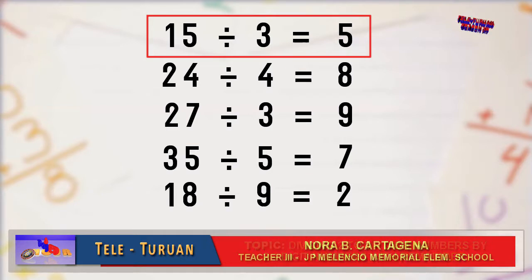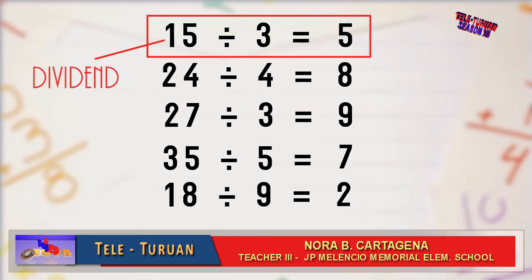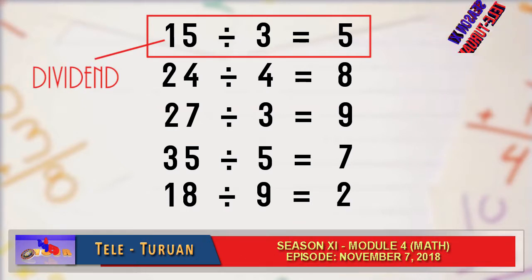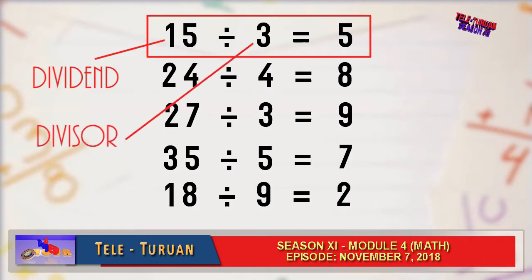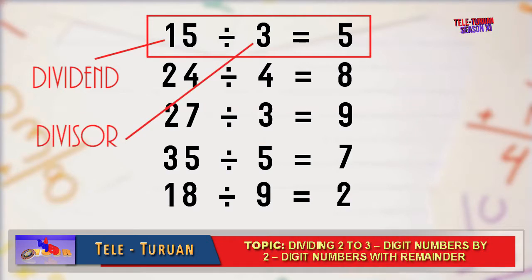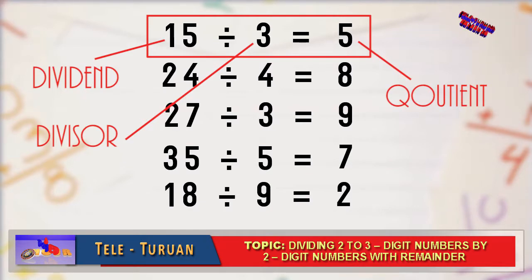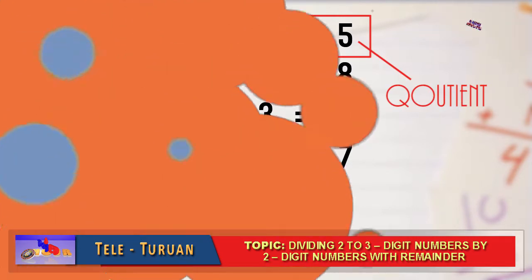In 15 divided by 3 equals 5 — what is the dividend? The dividend is 15. What is the divisor? The divisor is 3. What is the quotient? The quotient is 5. Yes, very good!